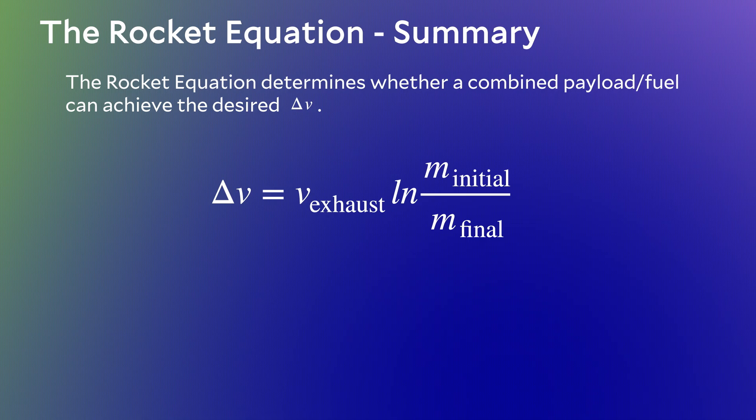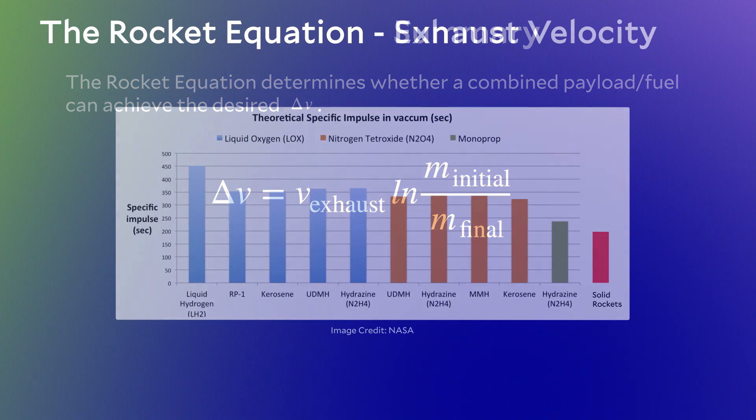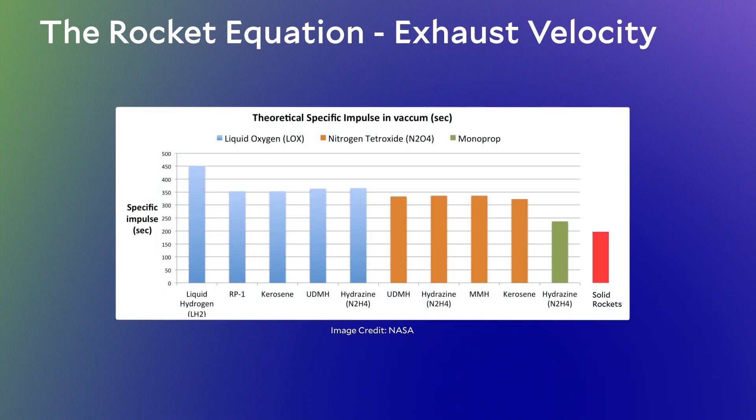The first place you might want to push on is increasing the exhaust velocity. The graph I showed last segment giving the exhaust velocity for various combinations of fuel and oxidizer was a result of a huge amount of development over very many decades. And while there's still ongoing research to improve exhaust velocity — especially to make rocket fuel both greener and cheaper to produce — it's unlikely there's going to be a breakthrough which significantly increases the exhaust velocity anytime soon.